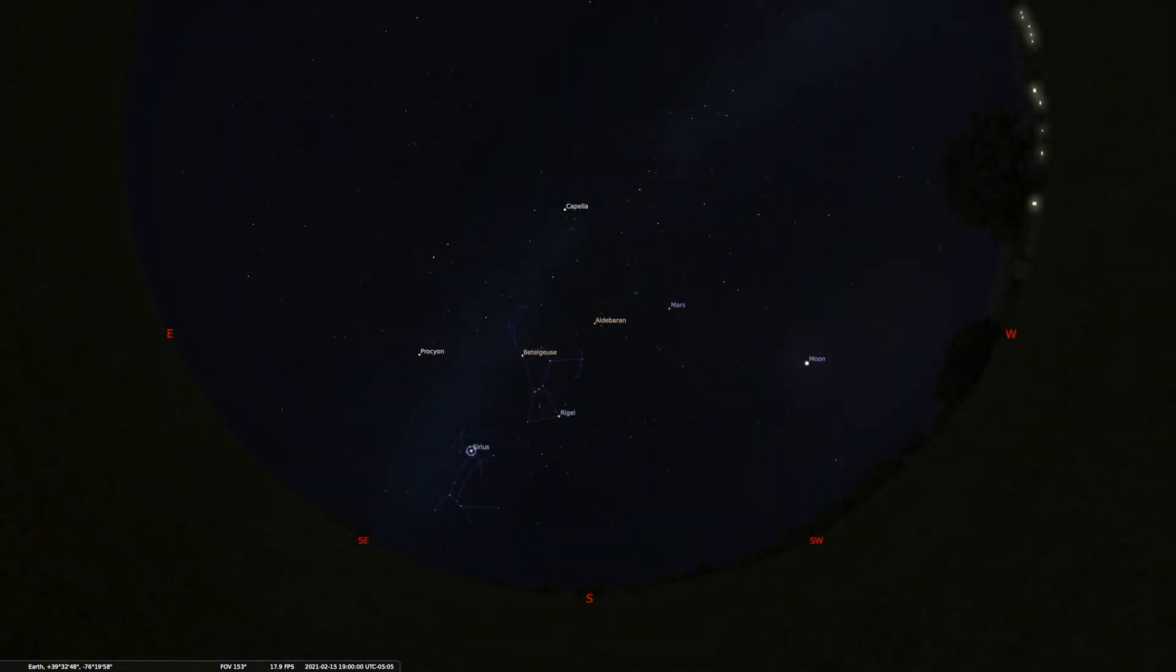So now I'm going to leave you with a challenge. Take your planisphere outside and see if you can find the stars Betelgeuse, Procyon, and Aldebaran. They're not labeled on the planisphere, but they're on the screen now. If you find them, tell your teacher you want to email the planetarium guy and let me know. I can't wait to hear from you. Thanks for watching.